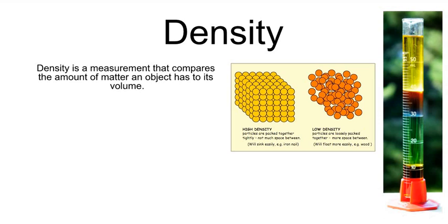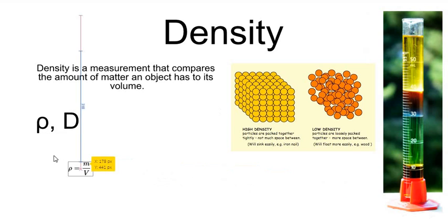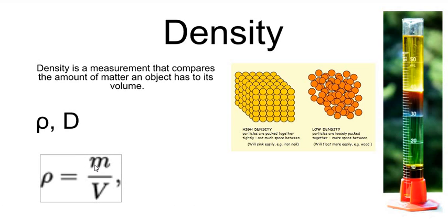Density is defined or labeled with the Greek letter rho, or it could be used with the Latin letter D, capital D. The formula, the mathematical formula for density, would be rho, or density, is equal to mass divided by its volume.